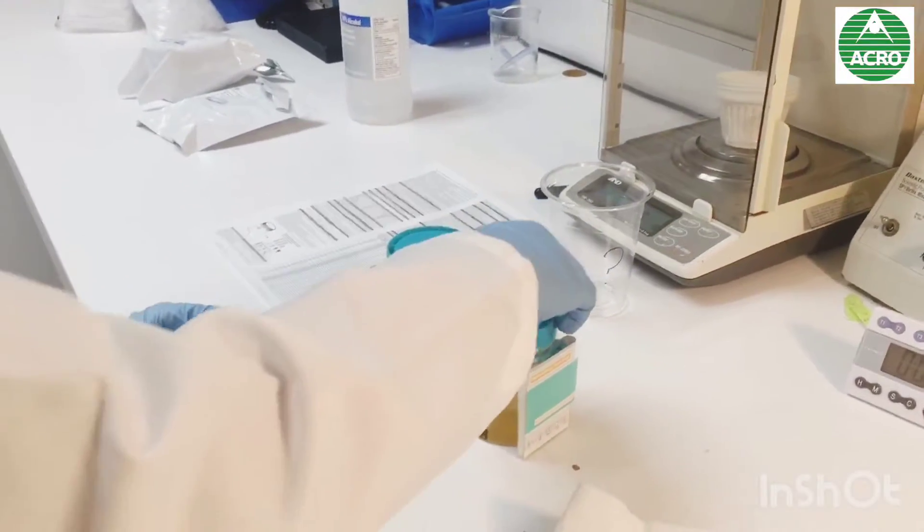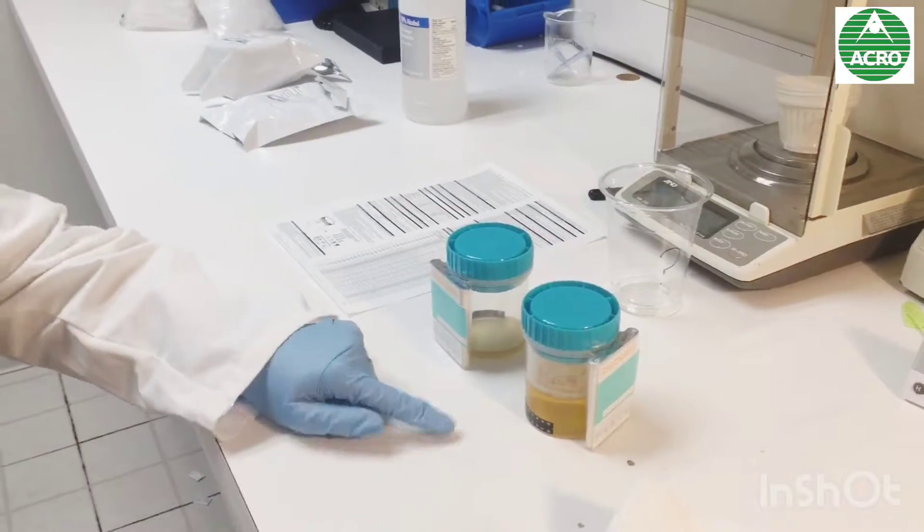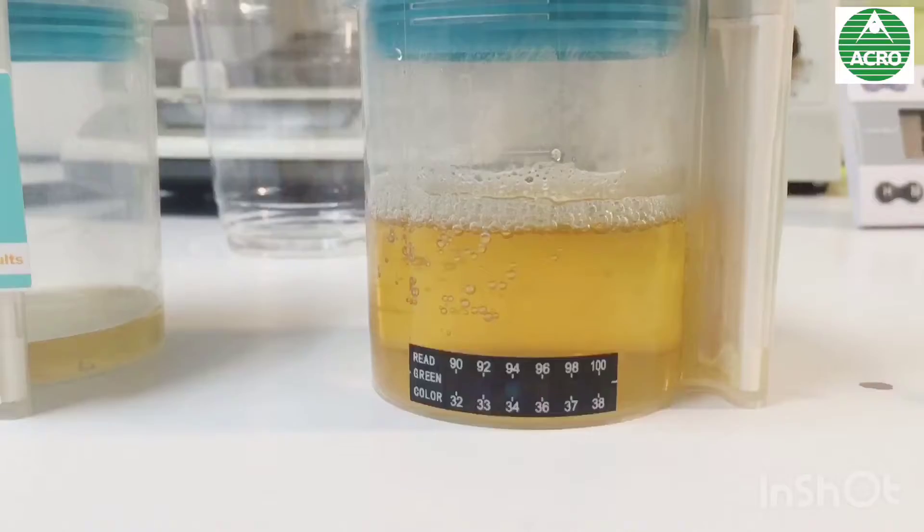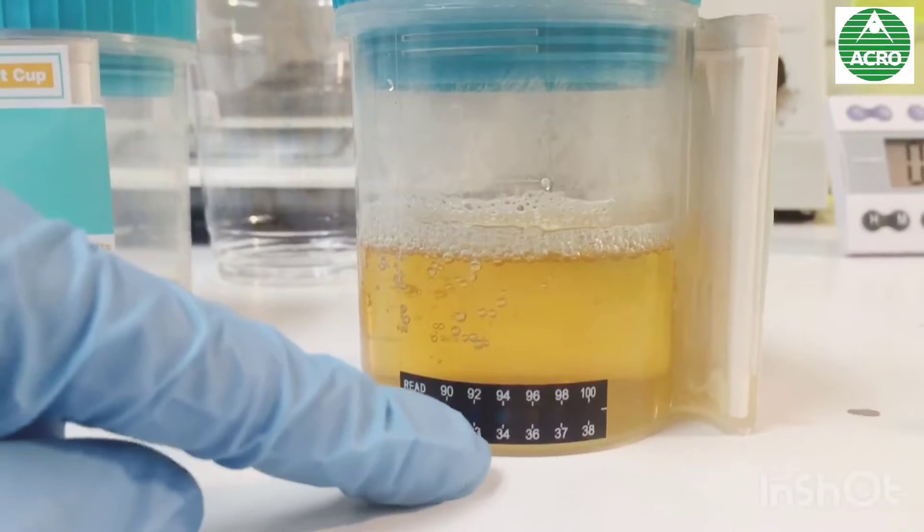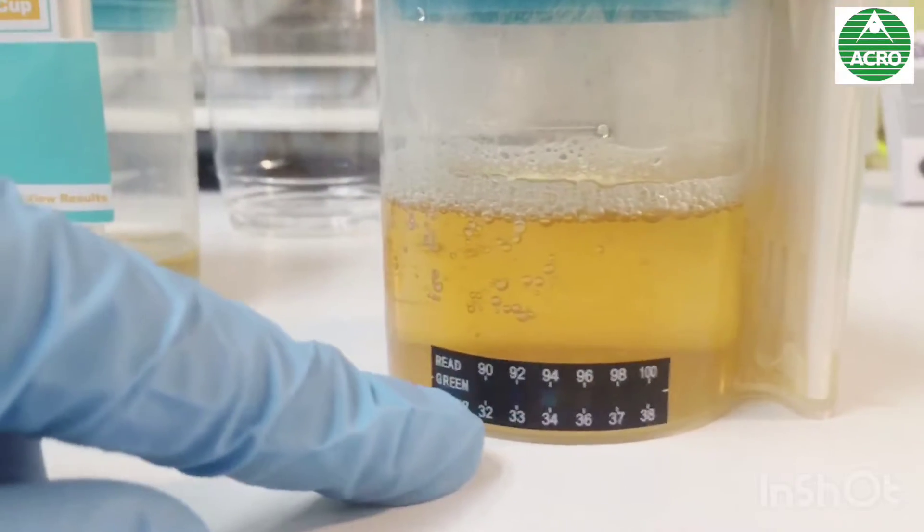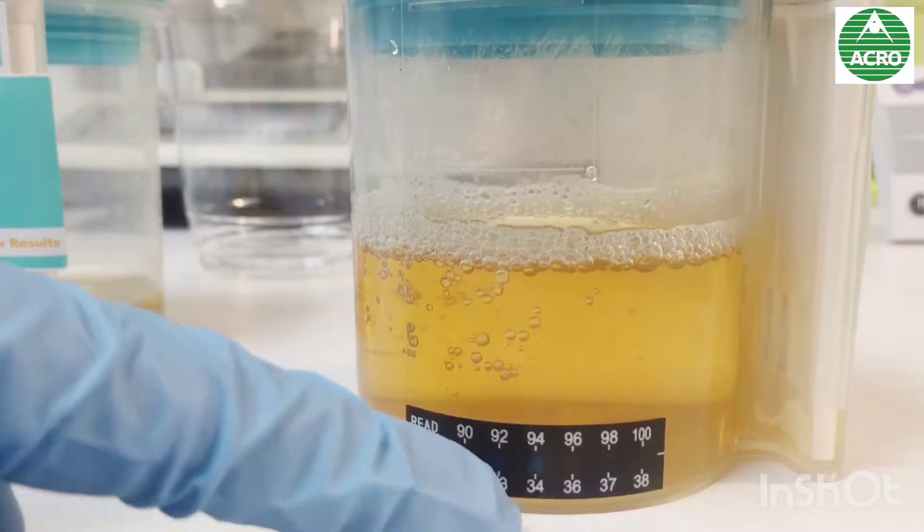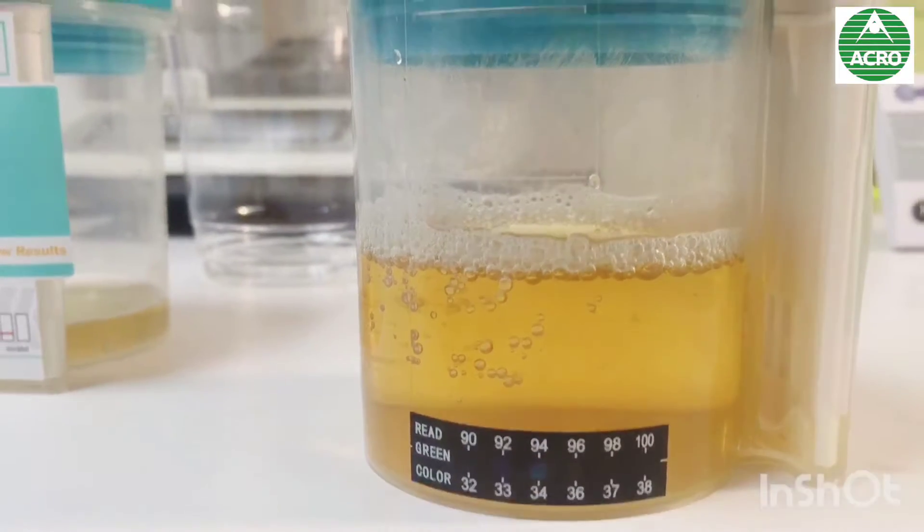So here we have his urine. And first thing we can check is the temperature. So in the volunteer urine, we can check that it's around 34 Celsius, 94 Fahrenheit degrees. So he didn't cheat on it.